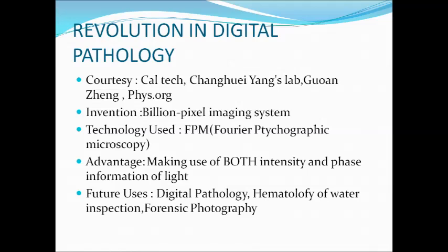FPM is used to convert low-resolution images into high-resolution images, giving a much more complete picture of the entire light field of the sample. Professor Yang says that what this project has developed is a means of taking low-resolution images and managing to piece out both intensity and phase of the light field of the target sample, making complete use of the light information.